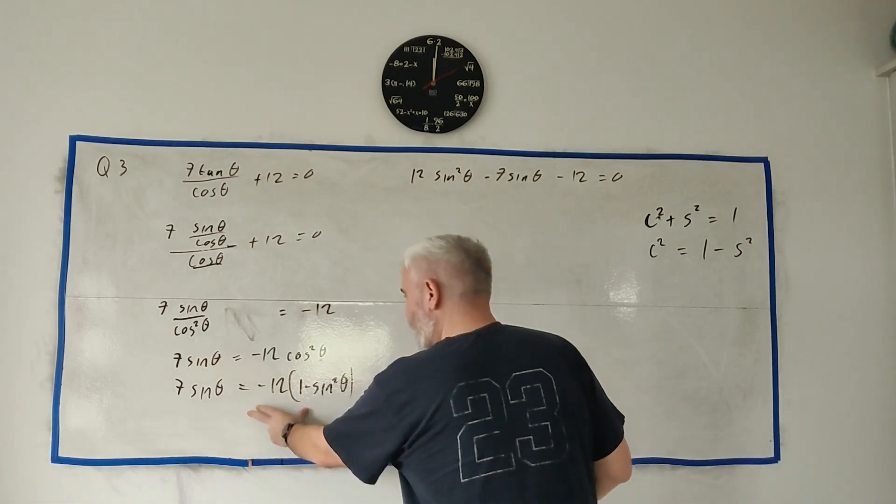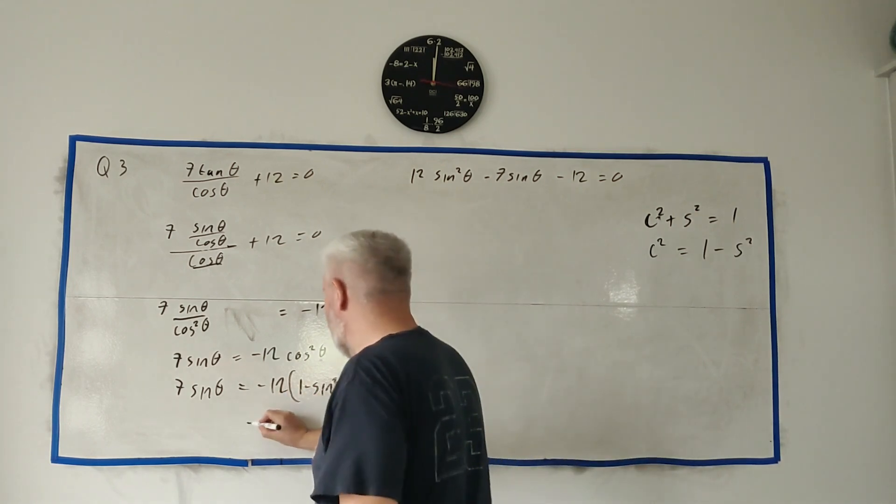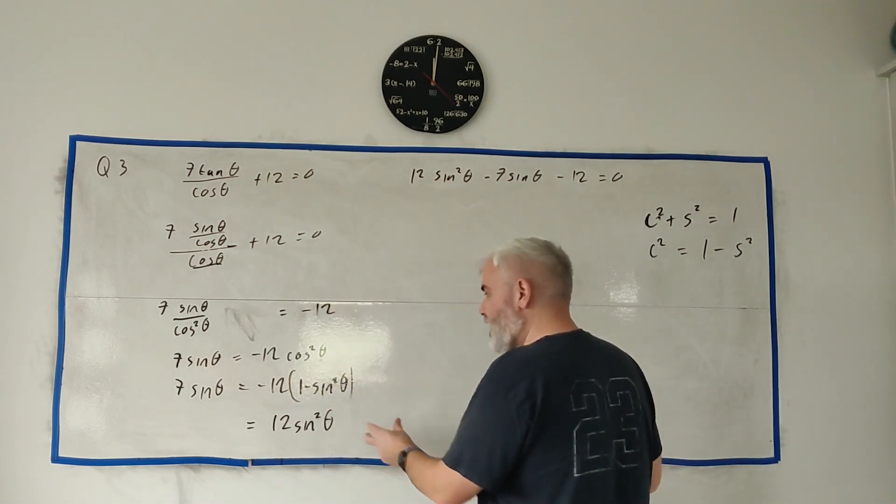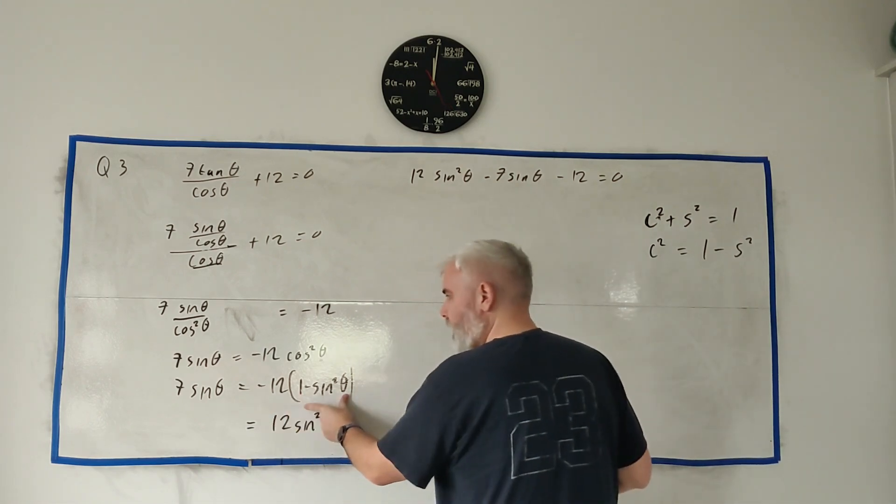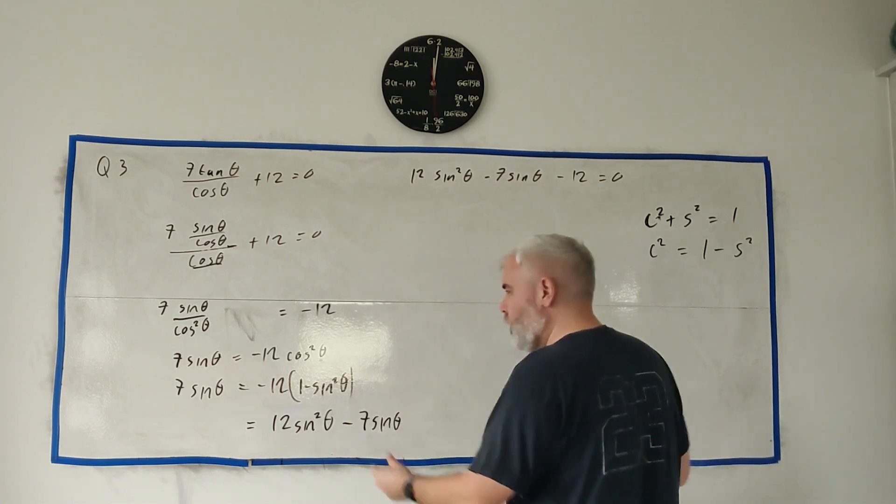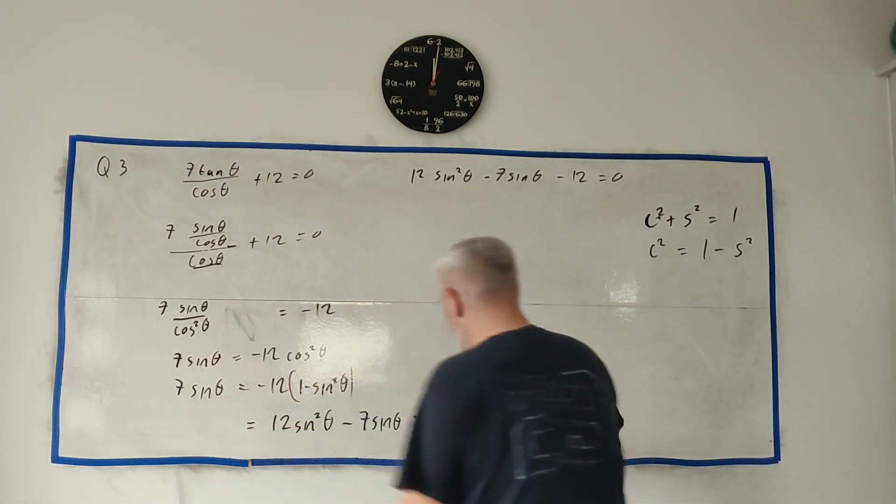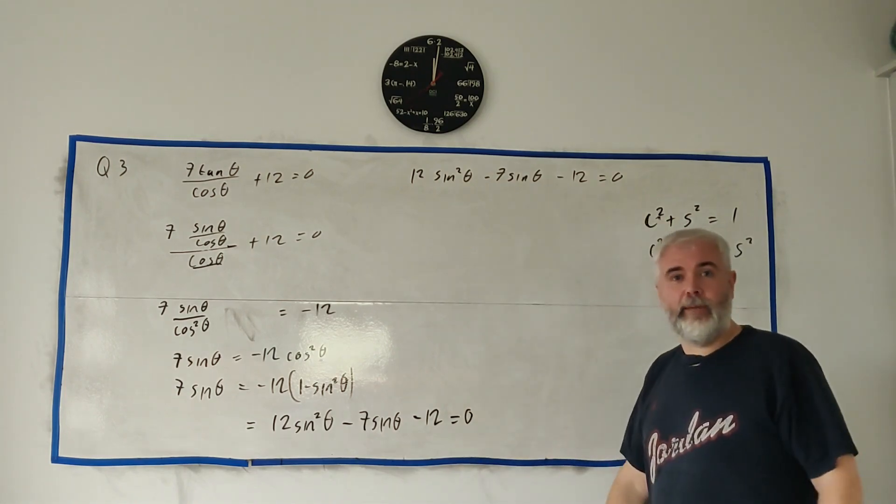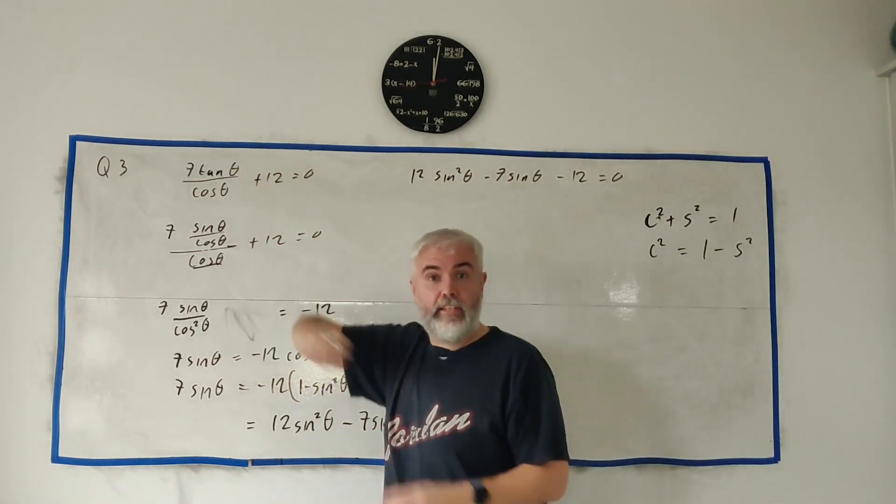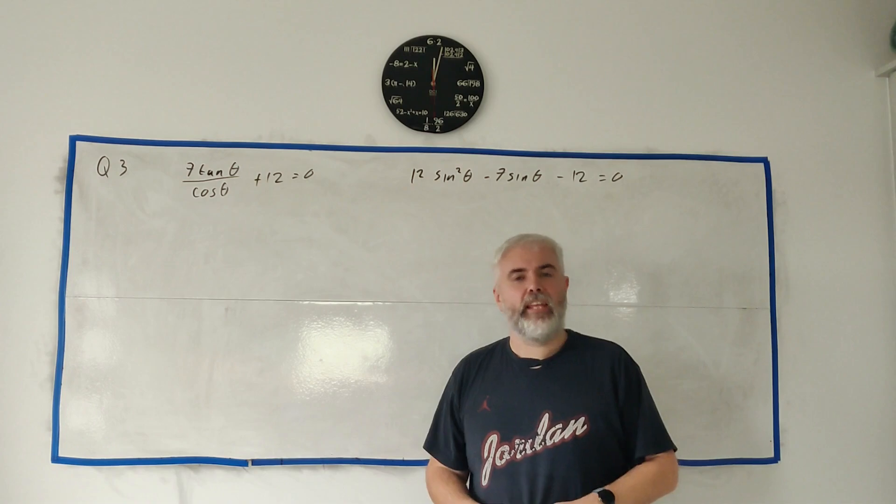And now hopefully we're starting to see this. This is looking a lot like up here. Let's get all the sine squares out. That would be minus 12 multiplied by minus sine squared. So that would be 12 sine squared theta. And let's get it all on the same side. We get minus 7 sine theta. And all the numbers. That's minus 12 times 1. That's a minus 12. And that's 0 on this side. Just to make it look the same. And yeah, that's answers part A.